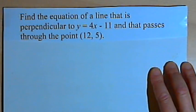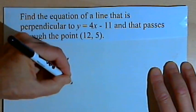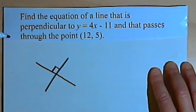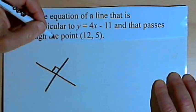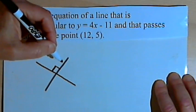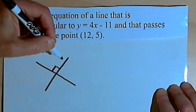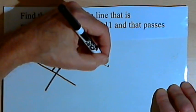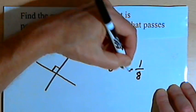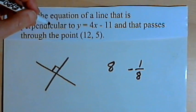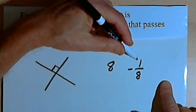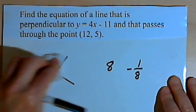Let's talk about perpendicular lines. If two lines are perpendicular, it means they intersect and at the place where they intersect we're going to have a right angle. The other thing you need to know is that if you know the slope of one of the lines, the slope of the other line is going to be the negative reciprocal of that slope. For example, if a line has a slope of 8, the reciprocal of 8 is 1 over 8, so the negative reciprocal would be negative 1 over 8.